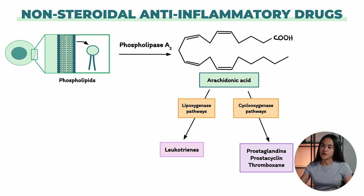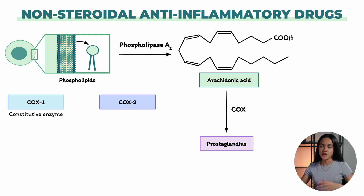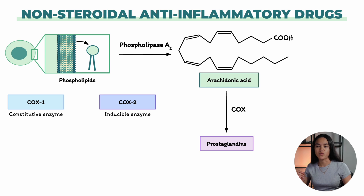We're going to focus on the cyclooxygenase pathway, specifically the synthesis of prostaglandins. The enzyme that produces prostaglandins is known as cyclooxygenase, or COX. There are two main types: COX-1 and COX-2. These are isoforms of the same enzyme. They are highly homologous, meaning they have lots of structural and sequence similarities, but they differ in where they are expressed, the tissue they are located in, and also when those enzymes are expressed.